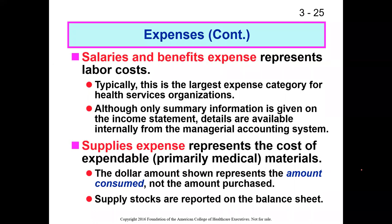Salaries and benefits represent labor costs. If you're estimating the cost of providing a service, don't just use the salary figure — salary is only one portion of the cost of labor. You also need to account for the significant cost of benefits. A good rule of thumb is to add 25 to 30 percent of salary cost on top of salaries to represent the cost of providing employee benefits. Supplies expense was explained earlier — the expense is recognized when supplies are used, not when purchased.